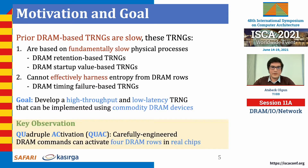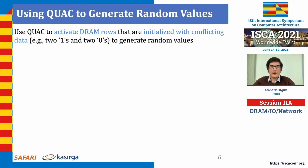We make a key observation: a carefully engineered DRAM command sequence can activate four DRAM rows in real DRAM chips. We call this new phenomenon a quadruple activation. Our key idea in developing a high-throughput DRAM-based TRNG is to use these QoAC operations and activate DRAM rows initialized with conflicting data to generate random values on DRAM sense amplifiers.